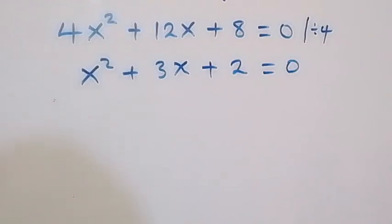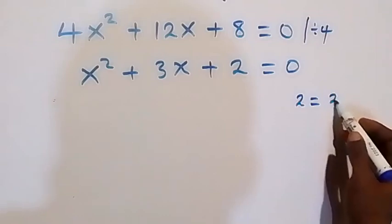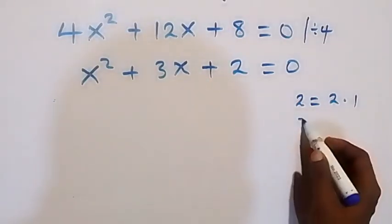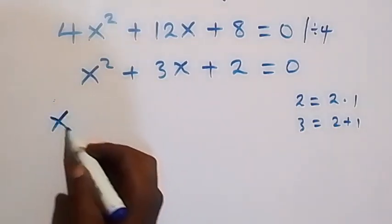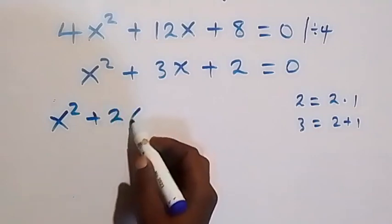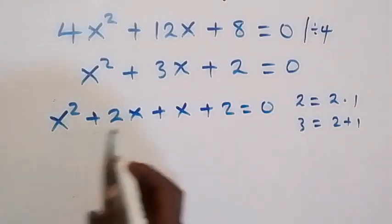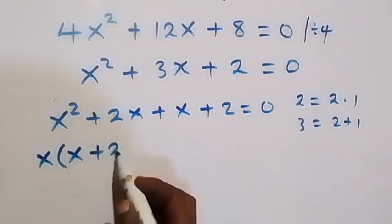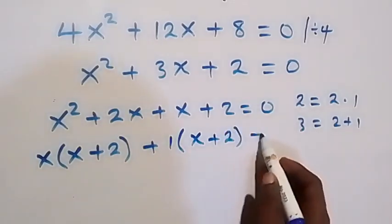We can solve this quadratic by factorizing. The product is 2, which equals 2 times 1, and the sum is 3, which equals 2 plus 1. So we replace to get x squared plus 2x plus x plus 2 equals 0, and factoring gives x(x plus 2) plus 1(x plus 2) equals 0.